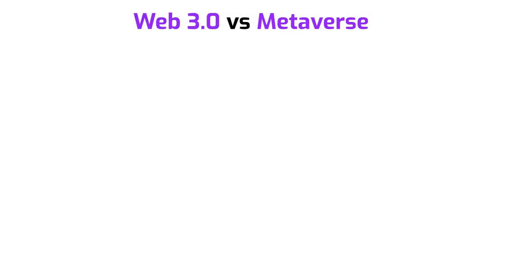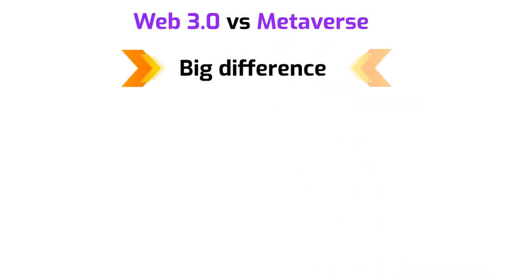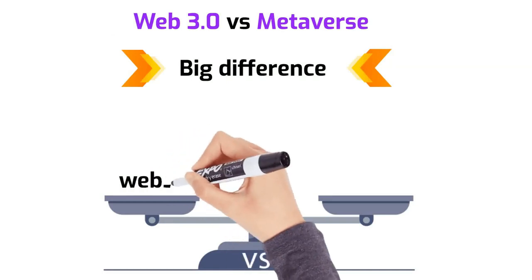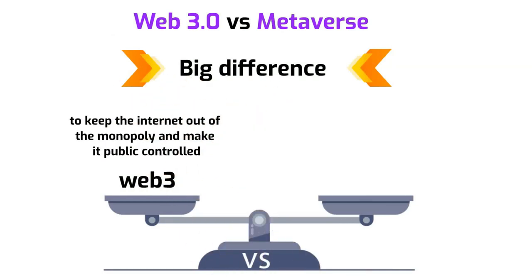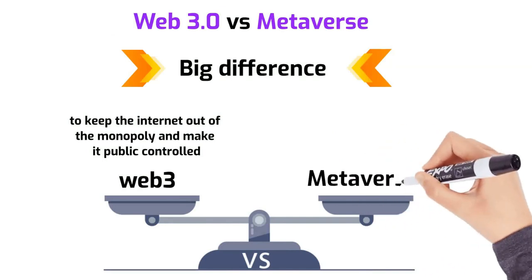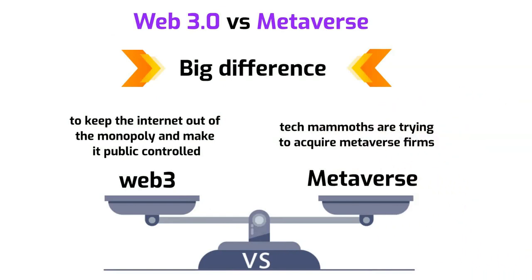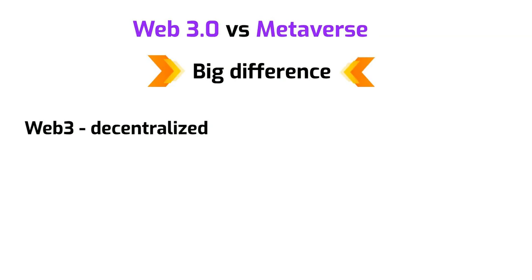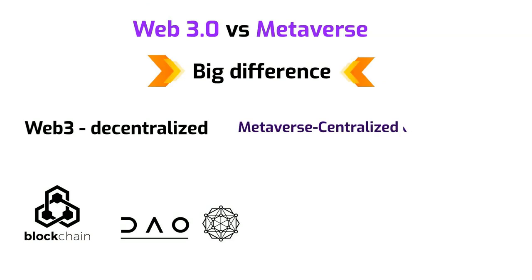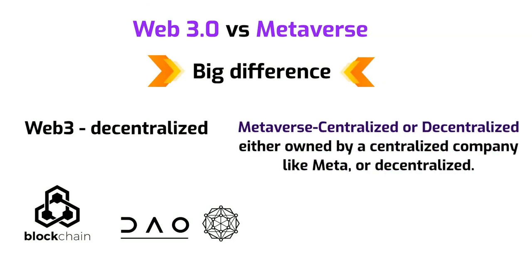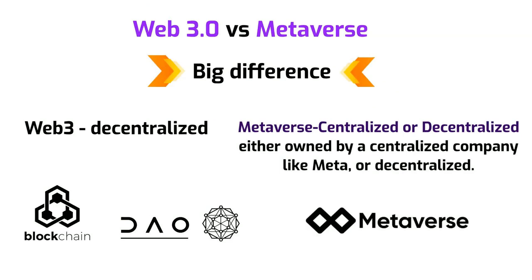It's easy to confuse Web 3.0 with the metaverse, but there are big differences between them. The objective of Web 3.0 is to keep the internet out of the monopoly of tech giants and make it public-controlled property. On the other hand, tech giants are trying to acquire metaverse firms to control this world already. Web 3.0 is a decentralized concept built on distributed technologies such as blockchain and DAO, while the metaverse can be either centralized — owned by a company like Meta — or decentralized. If users' ownership is prioritized, it is important that the implementation of the metaverse be a decentralized one.